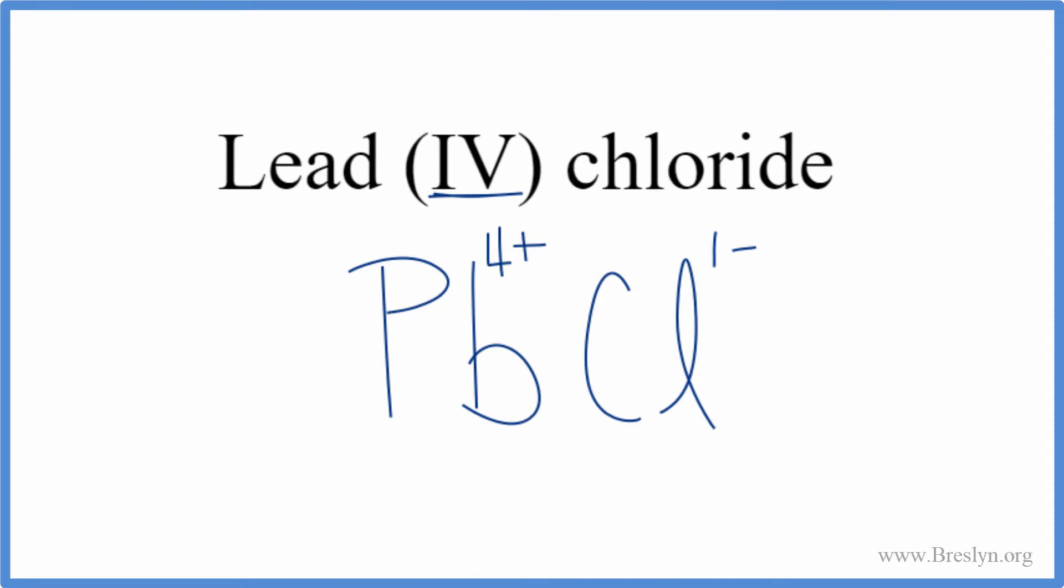So we'll use something called the crisscross method to figure out how to change the subscripts. We take the 1, move it here, and then the 4, we move that down here. Remove the charges, and we don't write the 1 by convention. That's the formula for lead (IV) chloride.